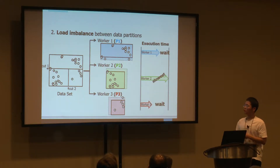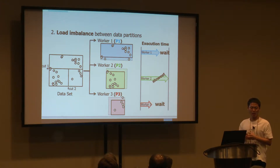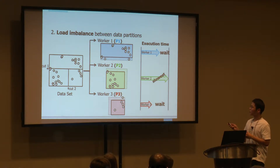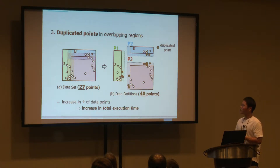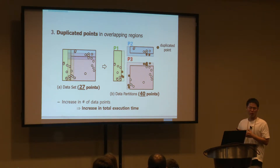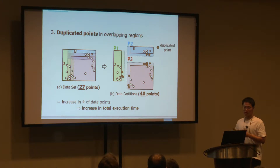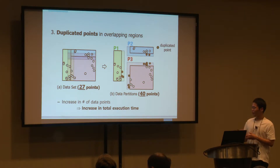The second limitation is load imbalance between data partitions. The number and distribution of data points between partitions can be significantly different. All workers must wait for the slowest worker before merging — this is a synchronization problem. The third limitation is duplicated points in overlapping regions. The total number of points in the dataset is 27, but after region-based partitioning, the total number of data points processed increases to 54. Obviously, as the number of processed points increases, the total execution time also increases.